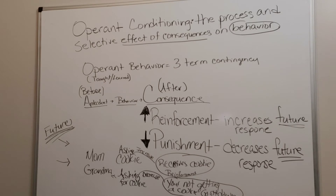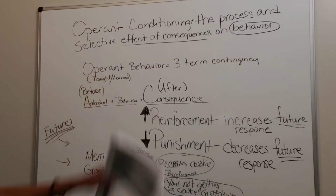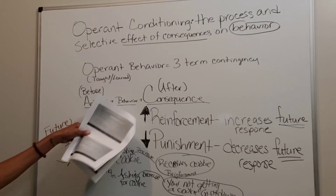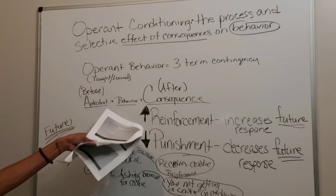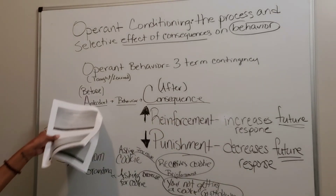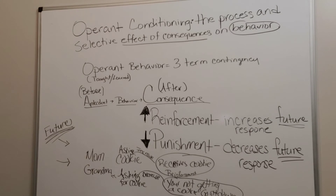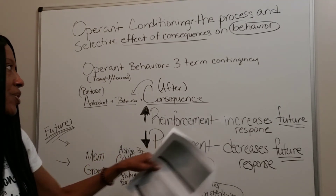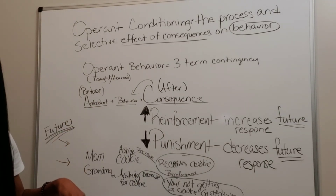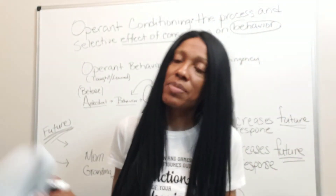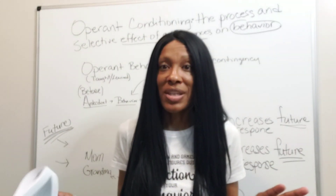Just remember that operant conditioning is the process and selective effect of the consequence on the behavior. The consequence terms are reinforcement and punishment. If the person comes into contact with something reinforcing, it'll increase the probability in the future that the same behavior will occur again. If they come into contact with something that's not great or the experience is unpleasant, it's going to decrease the likelihood they would do that same behavior. We've got a couple more basic concept terms to go over and then we'll start working on the things in your task list.